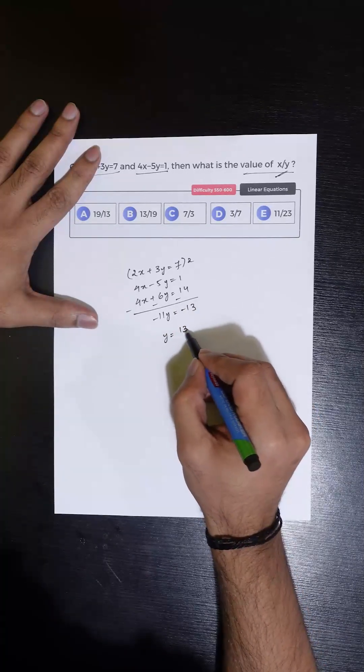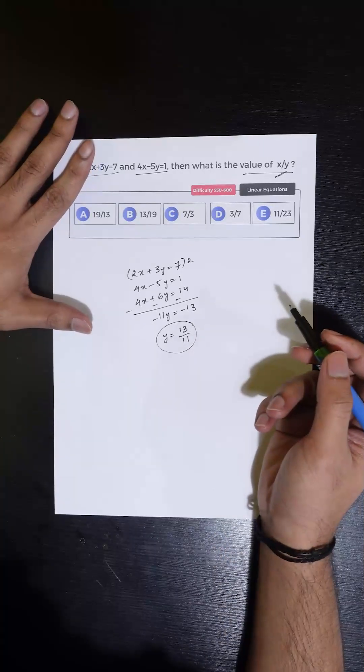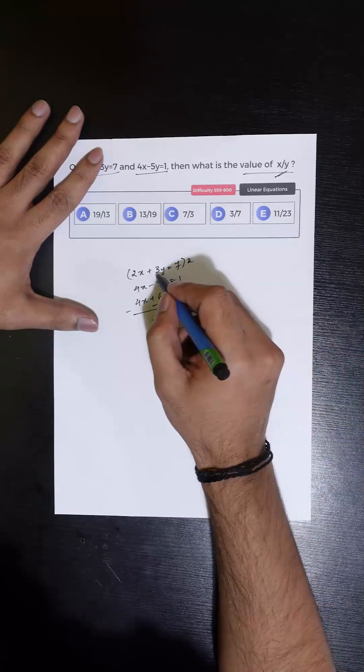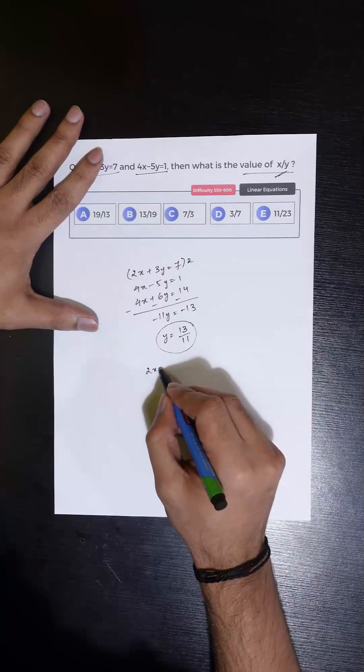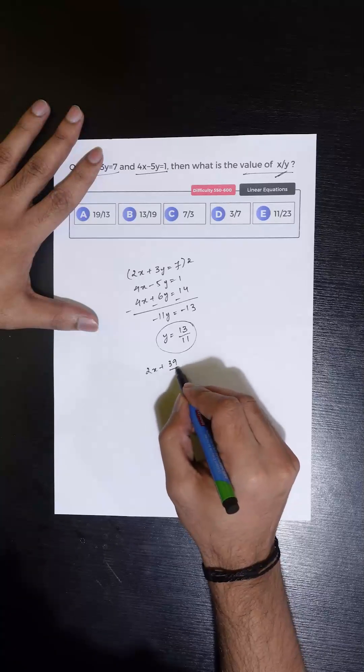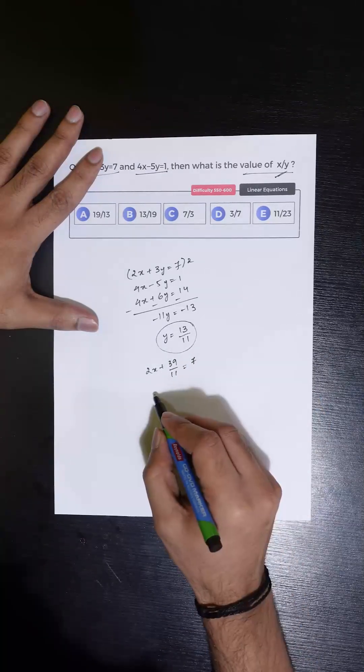So we get the value of y to be 13 by 11. Now, substituting the value of y in the equation, we get 2x plus 3 times 13 by 11 is equal to 7.